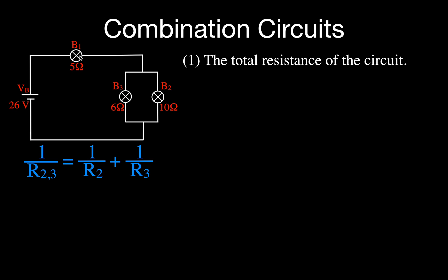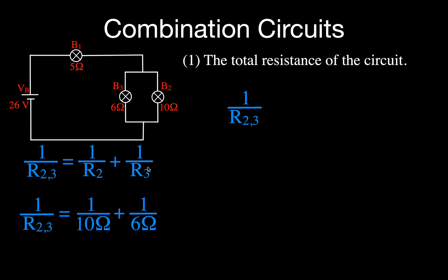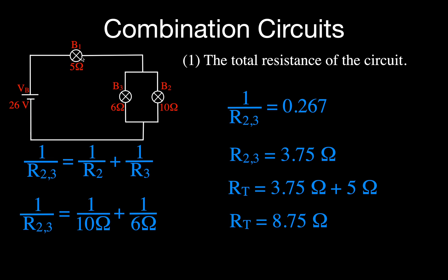We start with the one-over equation: one over R₂₃ equals one over R₂ plus one over R₃. Putting in 10 and 6, you get one over R₂₃ equals 0.267. That's not the resistance — that's one over the resistance. So you take the inverse: one divided by 0.267 gives you the equivalent resistance of those two as 3.75 ohms. Now, in series with the first resistor, you just add: 3.75 plus 5 equals 8.75 ohms total resistance.